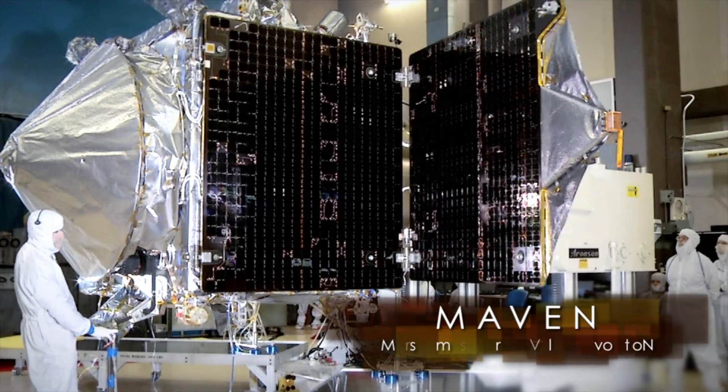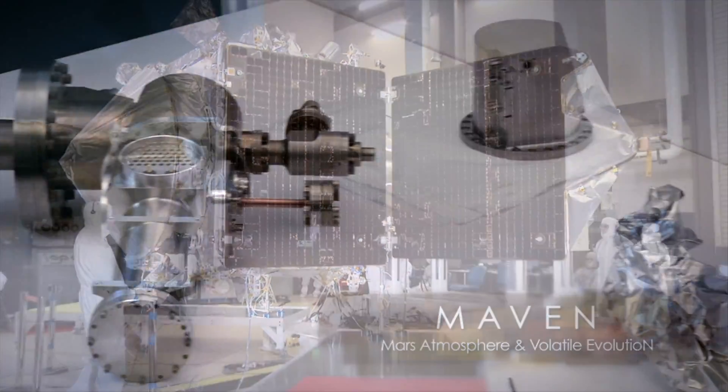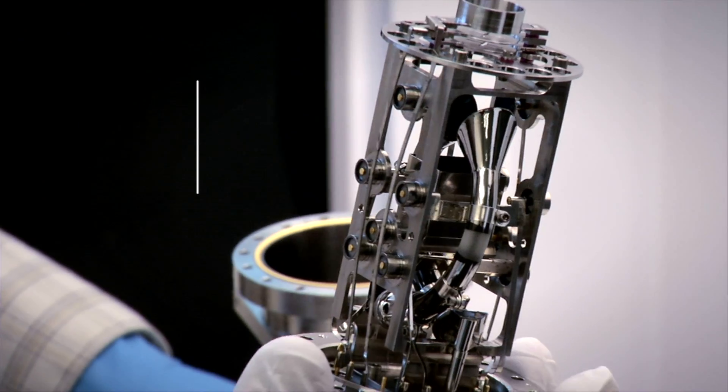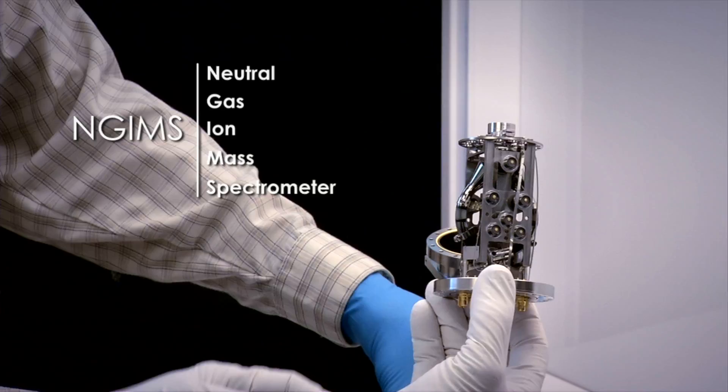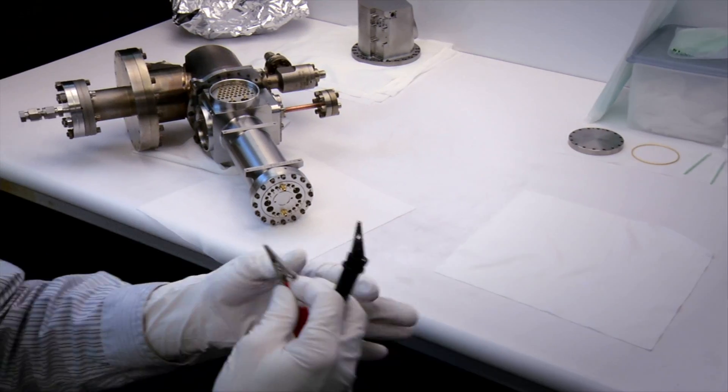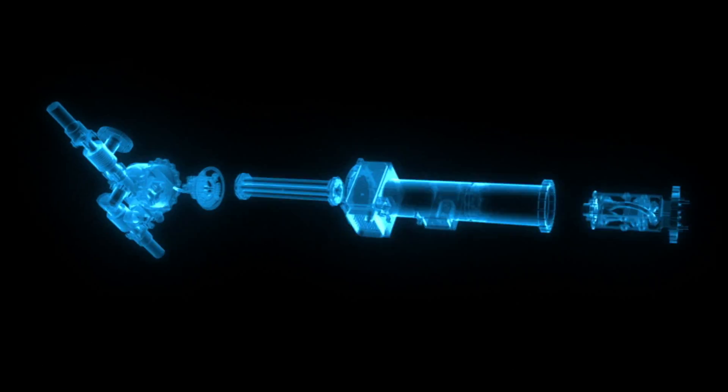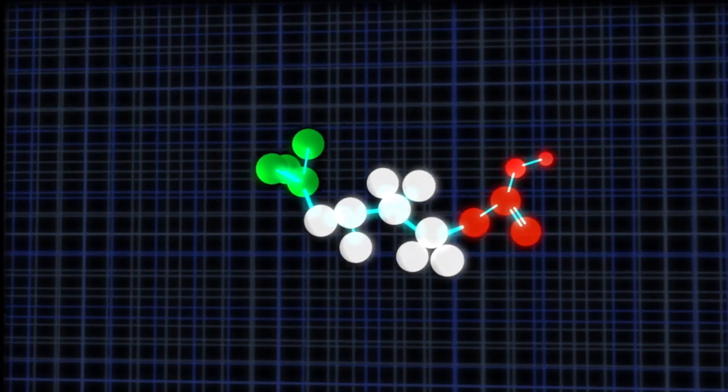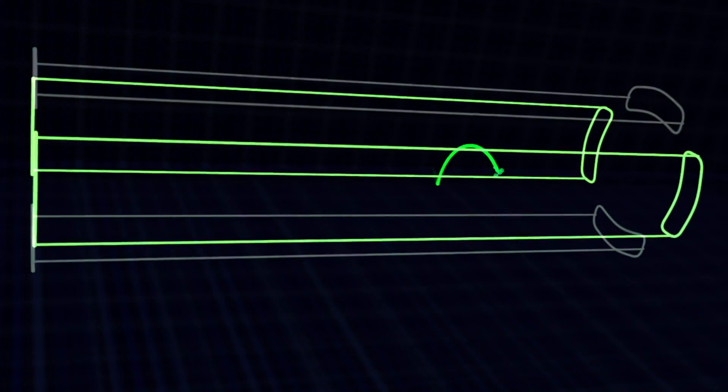MAVEN stands for Mars Atmosphere and Volatile Evolution Mission. The NGIMS experiment on MAVEN is the Neutral Gas and Ion Mass Spectrometer. We have an acronym for everything here at NASA. And this experiment is a quadrupole mass spectrometer with two ion sources designed to look at both neutral gases and ions in the upper atmosphere at Mars.